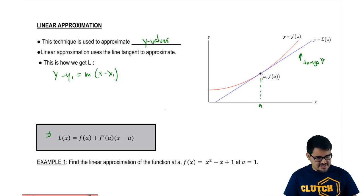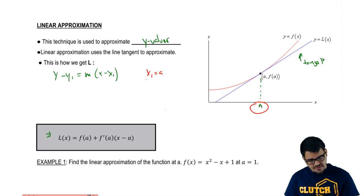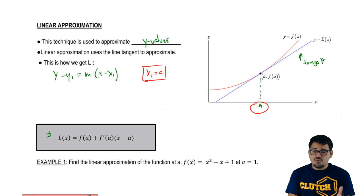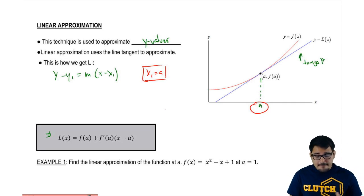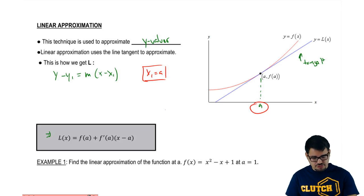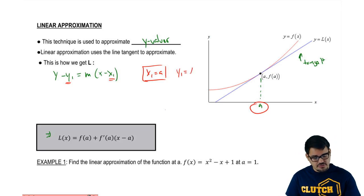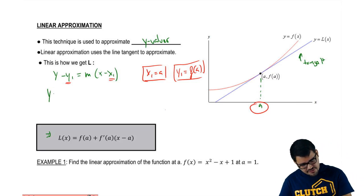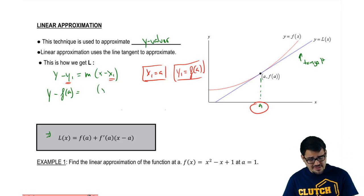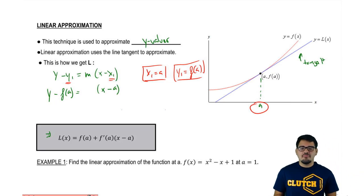First things first, we're going to say that this a value is equal to our x1 — so x1 equals a. That is our first change: a is an x value, and x1 is going to be our x1. Now, if our x1 is equal to a, that means our y1 is equal to f of a. So that's our second change: y1 equals f of a, because x and y coordinates are matched to the same point. So a is the x value and f of a is the y value.